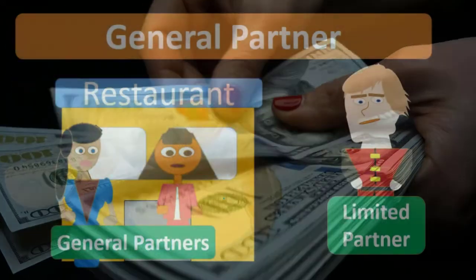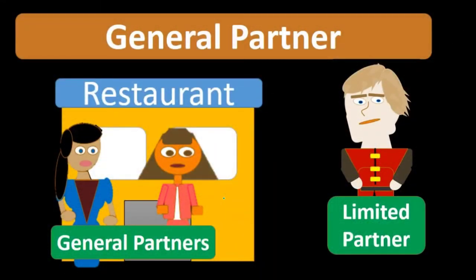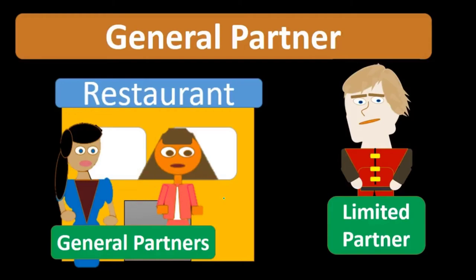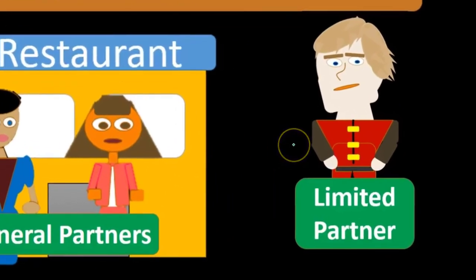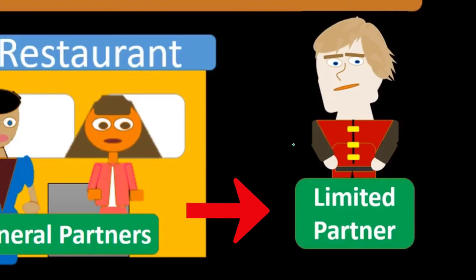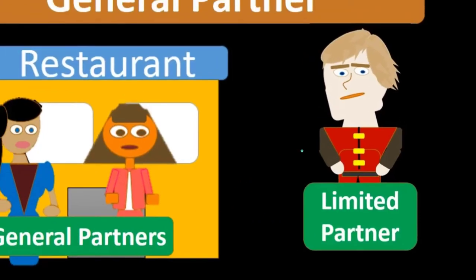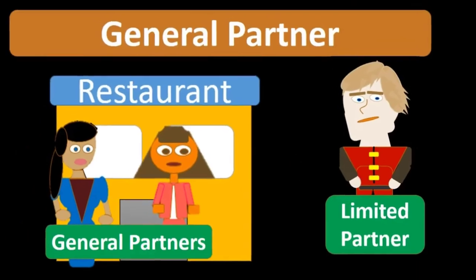General partners, similar to sole proprietors, have liability for what they bring into the business and also have liability exposure to their personal assets. A limited partner, however, does not have exposure to personal assets — they only have exposure to what is invested into the partnership.